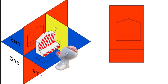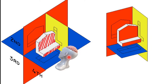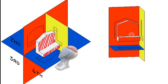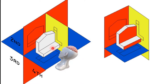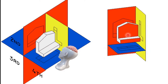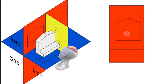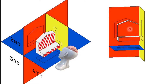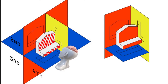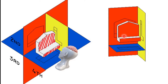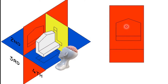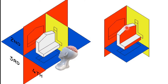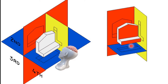If I want to see the front view, then this is the position of the observer and you can see the object is like this. So, this is actually the front view of this object.